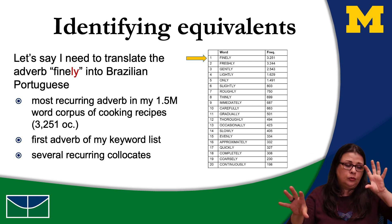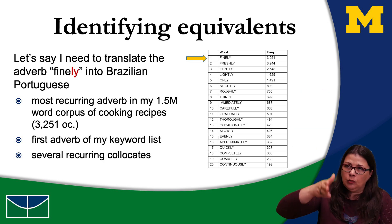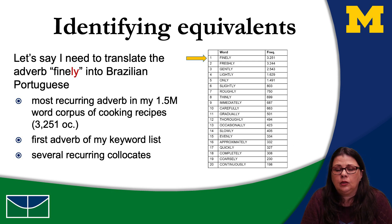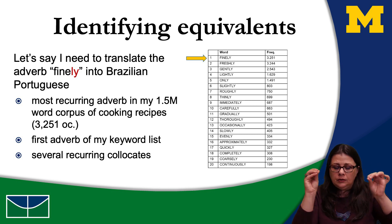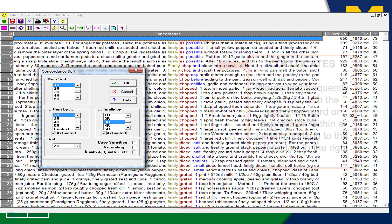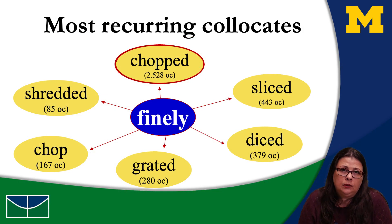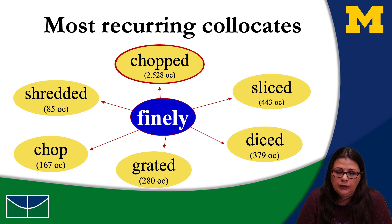After putting together a corpus with 1.5 million recipes in English and 1.5 million recipes in Portuguese, and running the word list, 'finely' is the most recurring adverb in the list. It occurs 3,251 times in this particular corpus and has several collocates — it co-occurs with several different verbs. If I look at the concordance lines, we can see some of these word combinations.